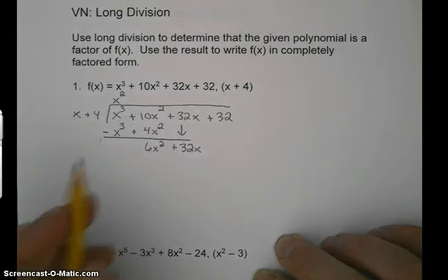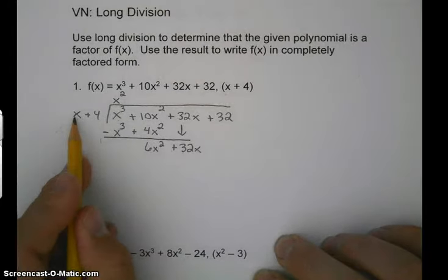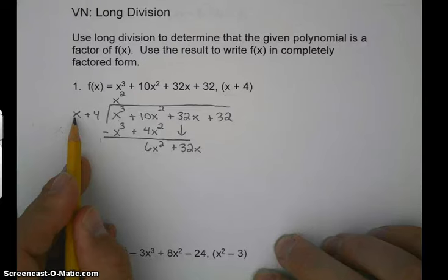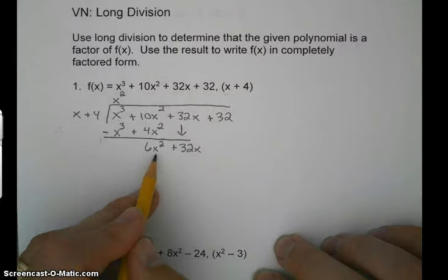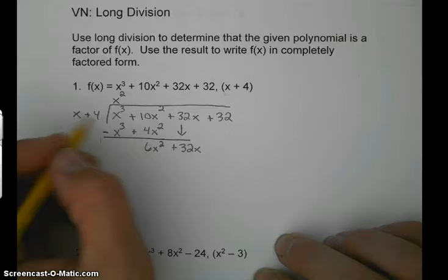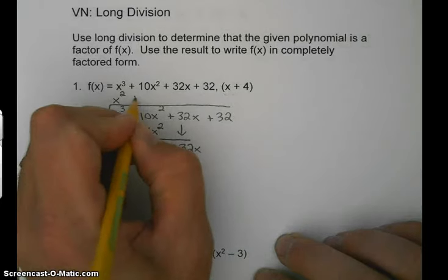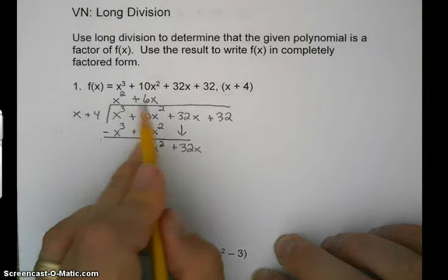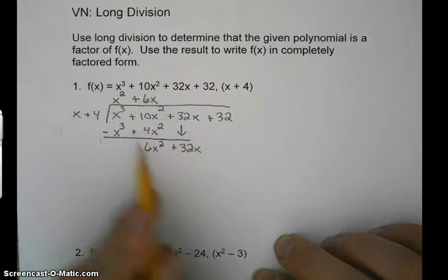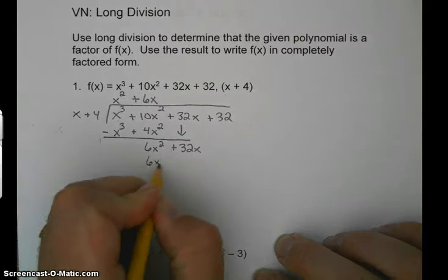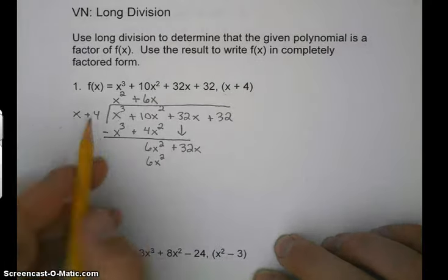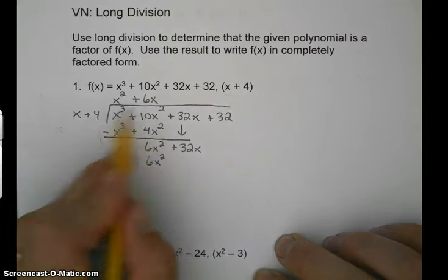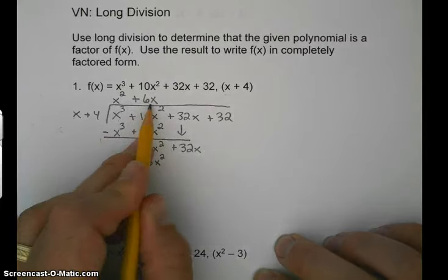Back to what we just did. So back to the x. x times what gives us 6x squared? Well, positive 6x. x times 6x is 6x squared. Then we do the second one. 4 times 6x squared.